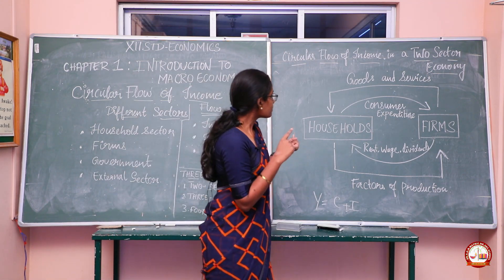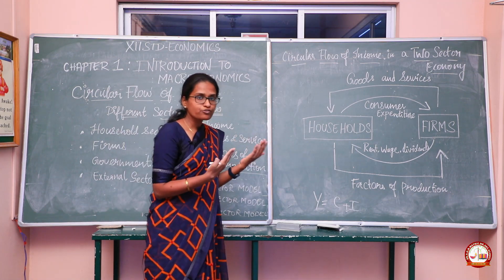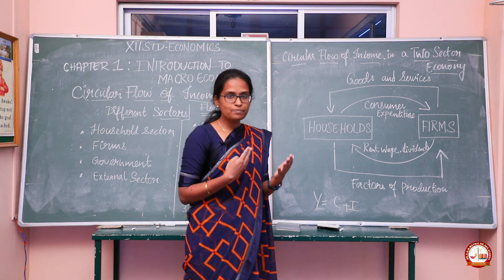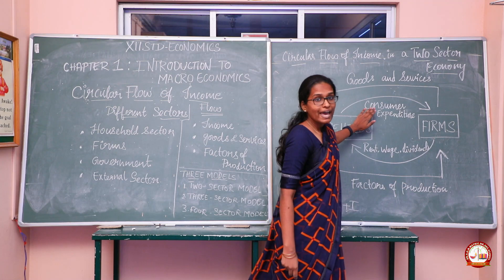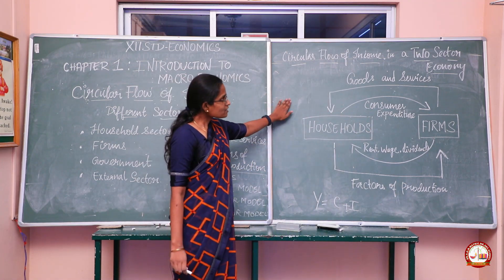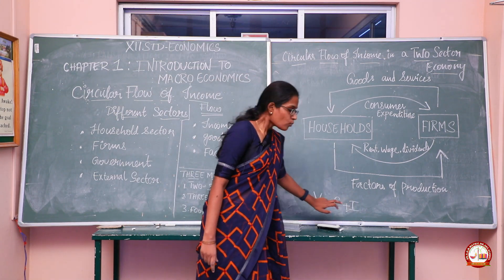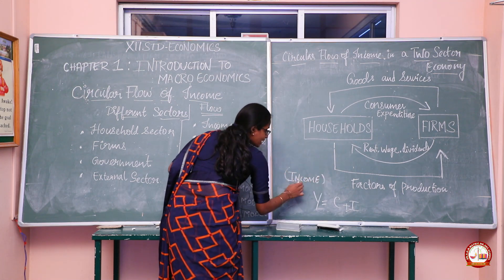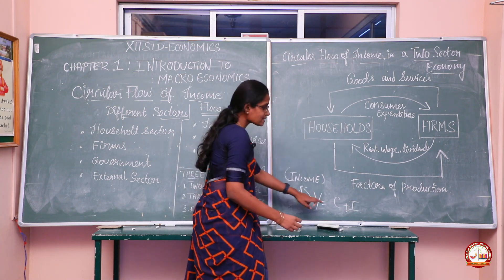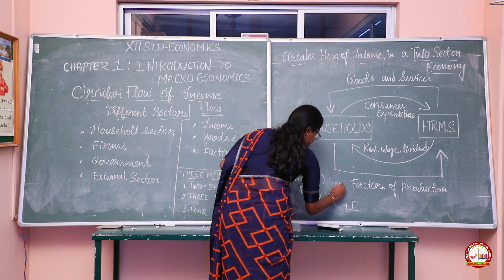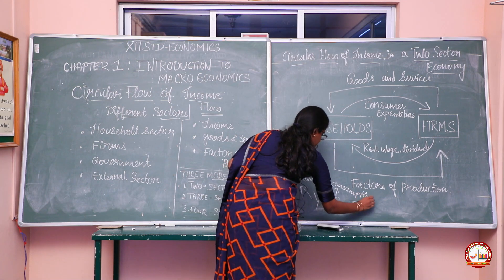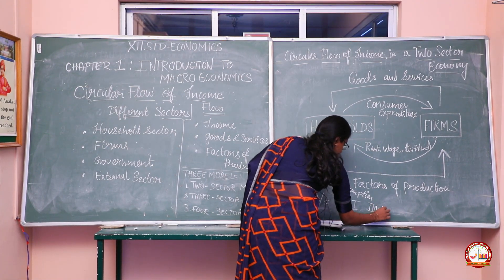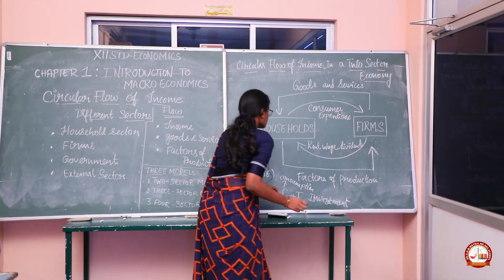The firm produces goods and services and satisfies the demand of households. Households are the consumers — they buy goods and services and in return give expenses, which is the payment for goods and services, called consumer expenditure. In this two-sector model, the equation is Y = C + I, where Y represents income, C represents consumption, and I represents investment.